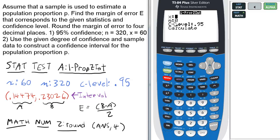Enter the data as given: X is 60, N is 320, and the confidence level is 0.95. You can either press enter or scroll down to Calculate and press enter.